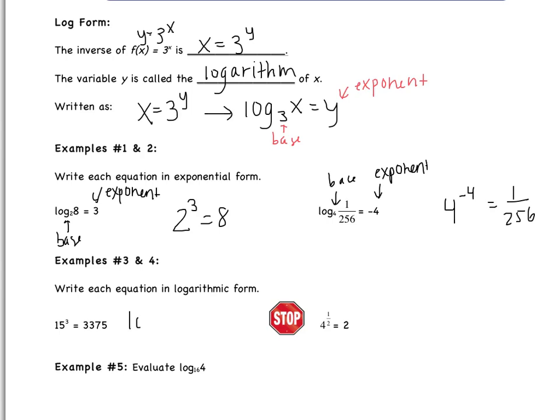So it's always going to start log. Here our base is 15. Exponent goes on the other side. And then the 3375 goes with the log. So I wrote that kind of sloppy. It should be log base 15 of 3375 equals 3.